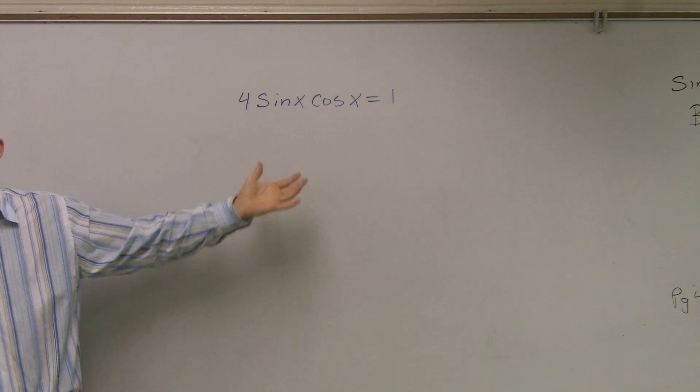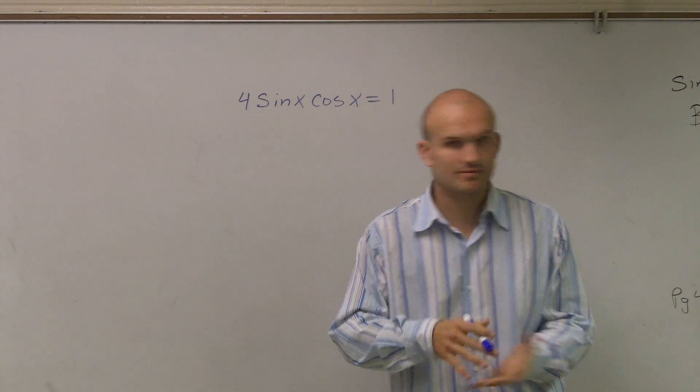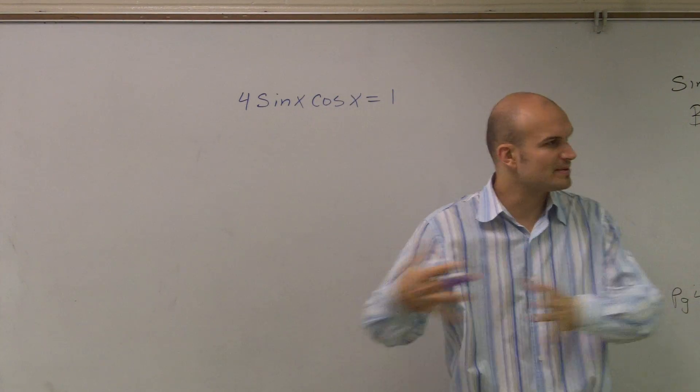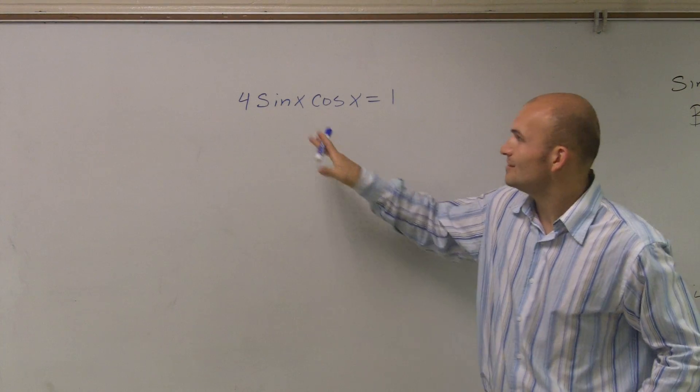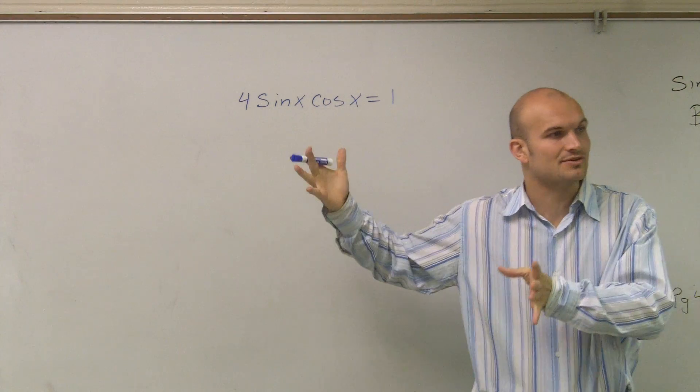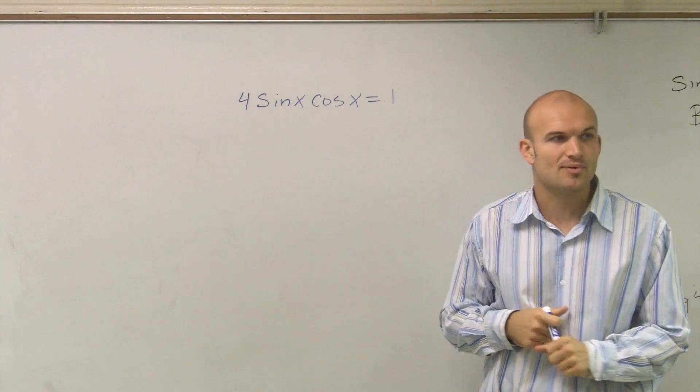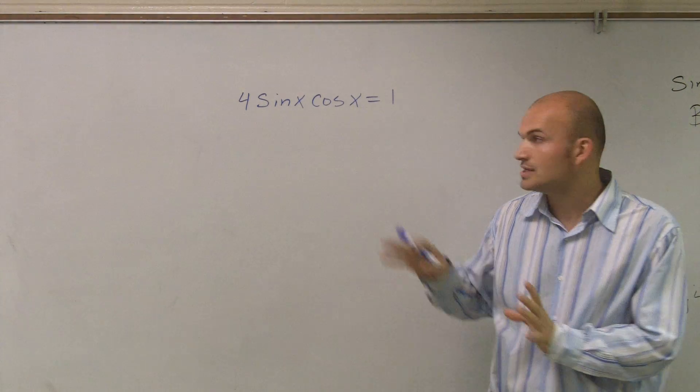And I'm having a difficulty with this because before what we've done is we've been able to transform things, right? We've said, oh, you know, we use Pythagorean identity or something like that. Well, here, if it equaled zero and I could factor it or something, I could use a zero product property. But I can't even do that for this problem. I'm really kind of getting to some difficulties.